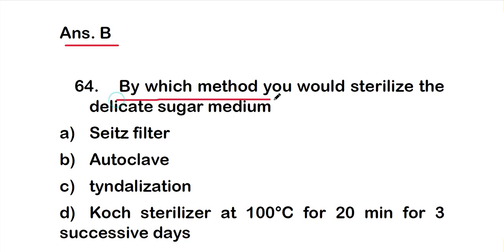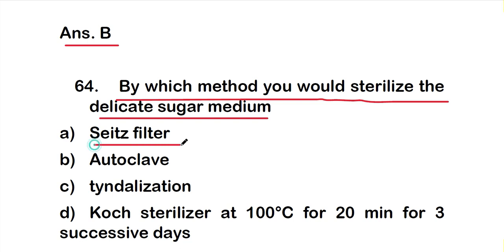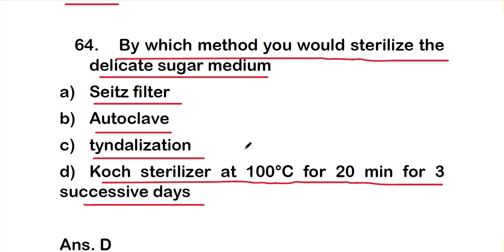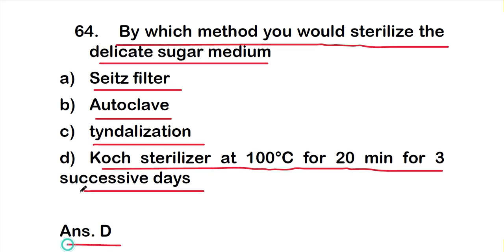Question number 64: By which method would you sterilize a delicate sugar medium? Options are: A) Seitz filter, B) autoclave, C) tyndallization, D) Koch's sterilizer at 100°C for 20 minutes for three successive days. The right answer is option D — Koch's sterilizer at 100°C for 20 minutes for three successive days is used for sterilization of sugar medium.